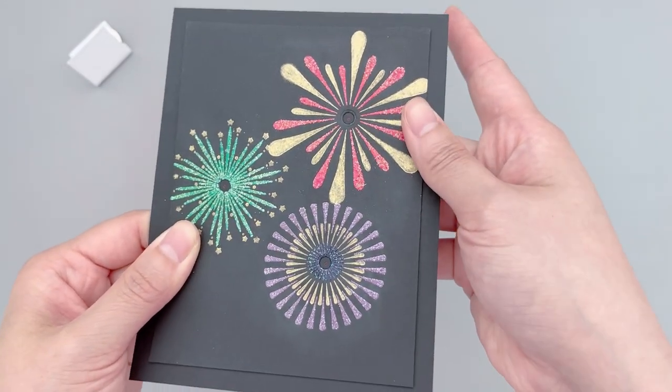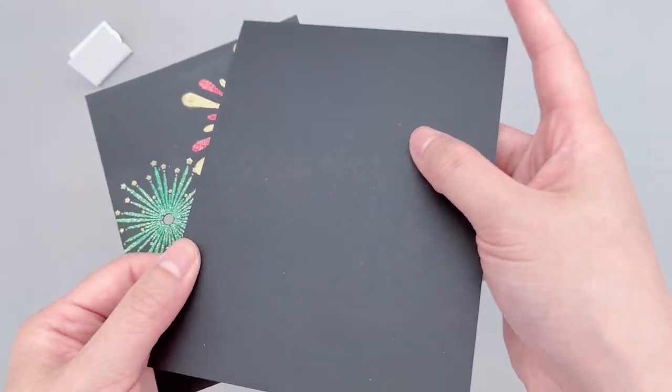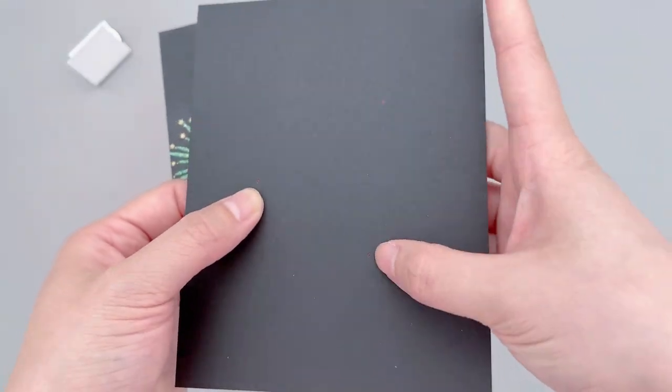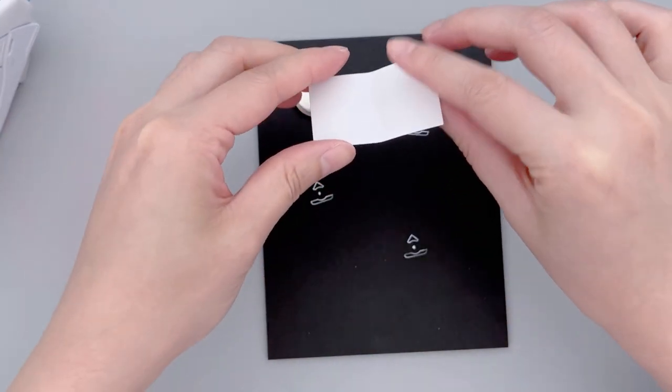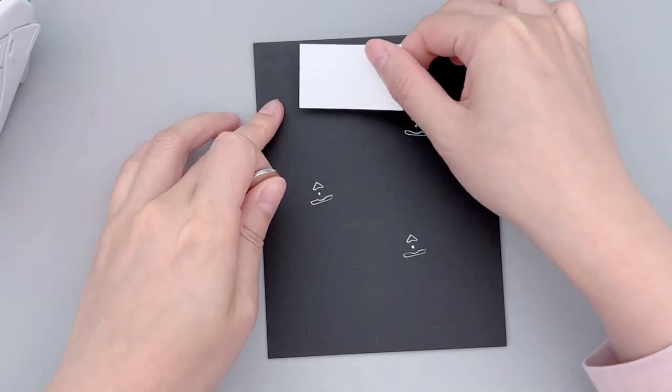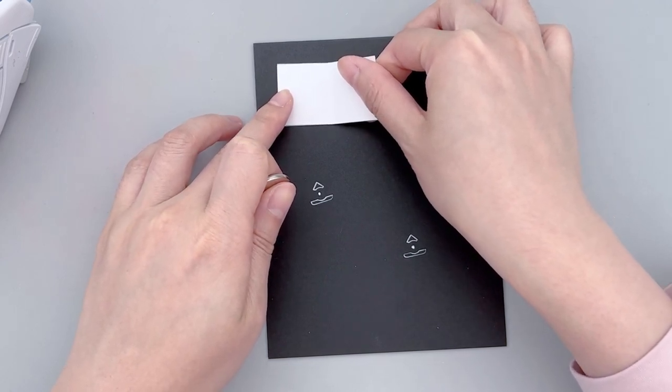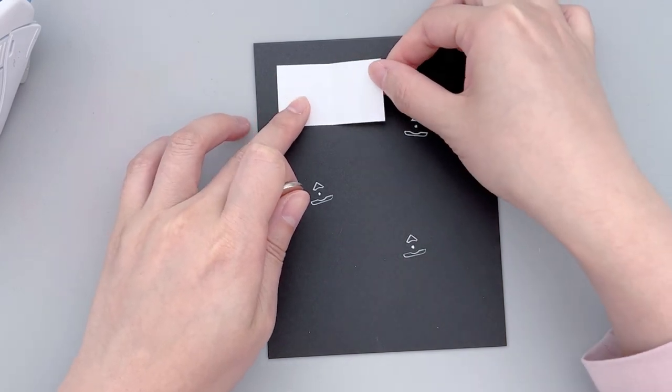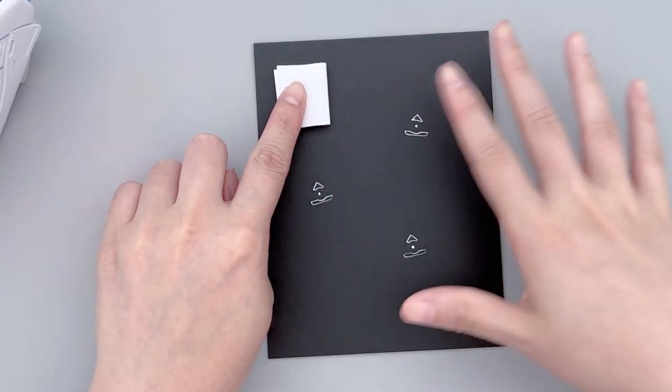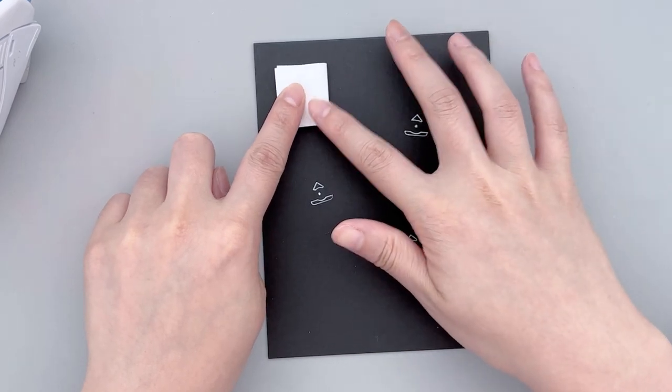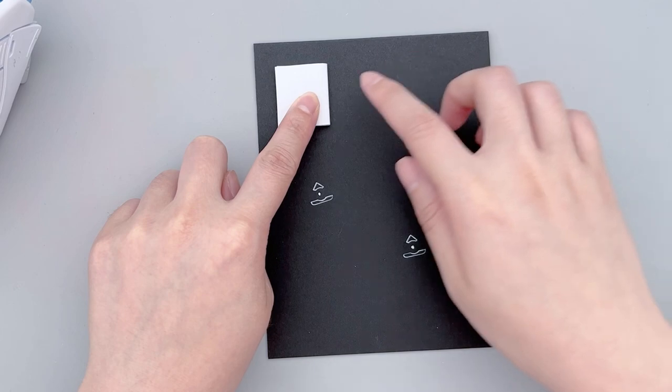I then mark the centers of the firework images, and those will be the positions of where we stick on the LED stickers. Next, we can move on to circuit making. But before we do that, make sure you also stick down the battery holder. For this card specifically, my front panel is slightly smaller than the card base. So I make sure my battery holder isn't right up the edge of the cardstock. I left some space around the border so that this battery holder won't show through the card panel when we stick it down.